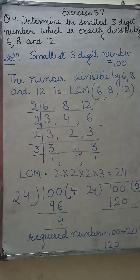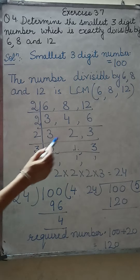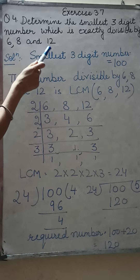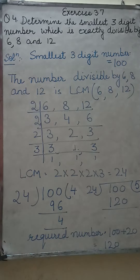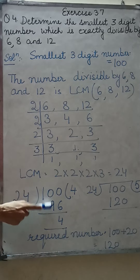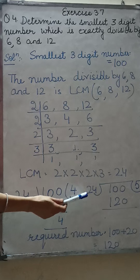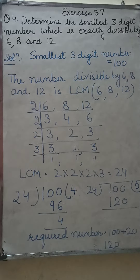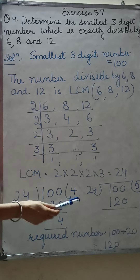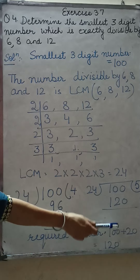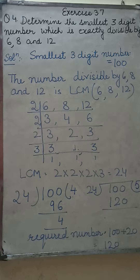Now the smallest 3-digit number that must be divisible by 24 — if it is divisible by 24, then it is also divisible by 6, 8, and 12. The smallest 3-digit number is 100. Let's divide 100 by 24: 24 times 4 is 96, so the remainder is 4. The remainder is subtracted, giving us 96. But 96 is a 2-digit number and we need a 3-digit number. So we take the next multiple of 24: 24 times 5 is 120. So 120 is the 3-digit number divisible by 24 and also by 6, 8, and 12. The required number is 100 + 20 = 120.